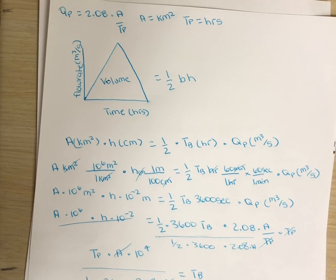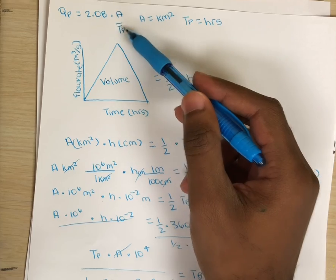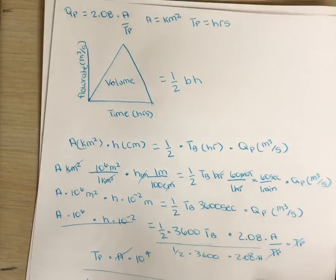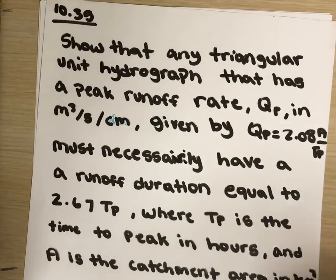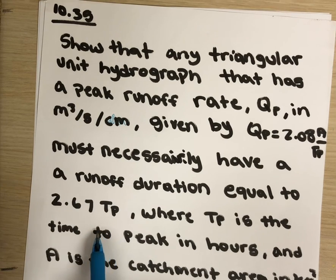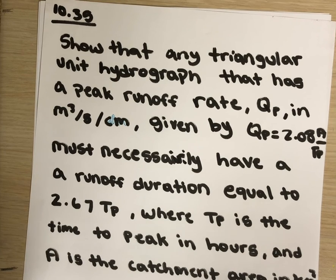Therefore, for any triangular unit hydrograph that has a peak runoff rate of 2.08 times A over tp will have a runoff duration that is equal to 2.67 tp, where tp is in hours and A is the catchment area in kilometers squared. So the proof is correct. Thank you.